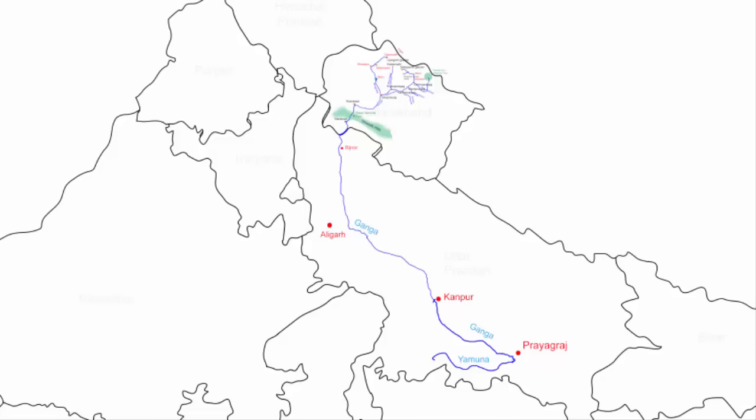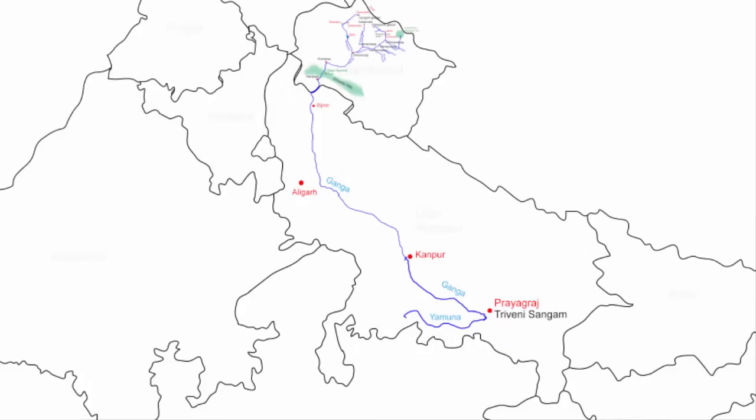Due to the confluence of these rivers, this place is named Triveni Sangam — an extremely sacred place for Hindus. Since physically only the Ganga and Yamuna merge here, Yamuna is considered the westernmost right bank tributary of river Ganga.